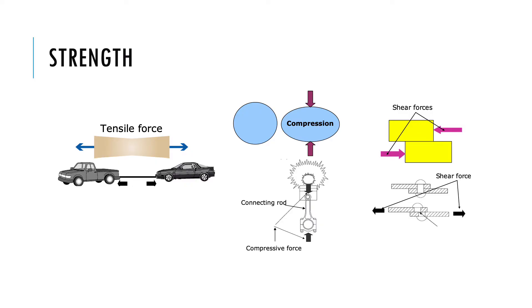Strength of material is its ability to resist an applied load without failure. A car tow rope needs tensile strength or it will break when pulled, and the engine connecting rod needs compressive strength to run engine without failure. Similarly, rivets need shear strength to resist being cut.